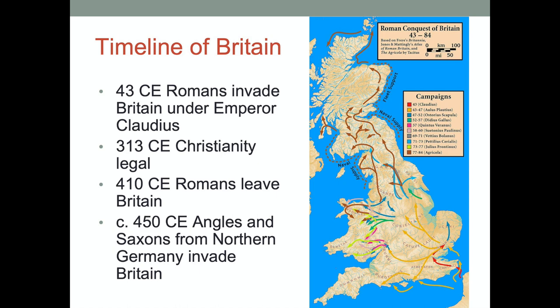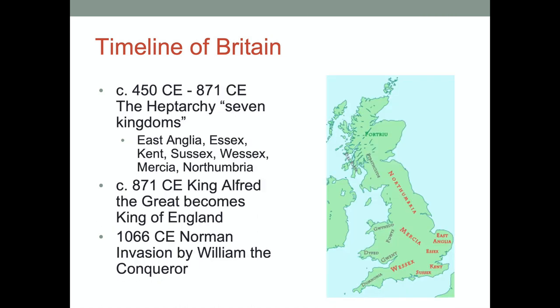Around 450, the Angles and the Saxons from northern Germany invade the Isles of Britain. Then from 450 to 871 we get something called the Heptarchy, which means seven kingdoms — a collection of seven different independent nations called East Anglia, Essex, Kent, Sussex, Wessex, Mercia, and Northumbria — up until 871, in which year King Alfred the Great unifies all of England.